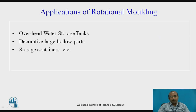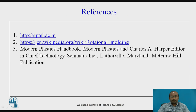Overhead water storage tanks — those big tanks — can only be produced through the means of rotational molding. Some decorative large hollow parts can also be produced through rotational molding. Storage containers are also another application of rotational molding. References for this presentation: NPTEL website, Wikipedia website, and the Modern Plastics Handbook.